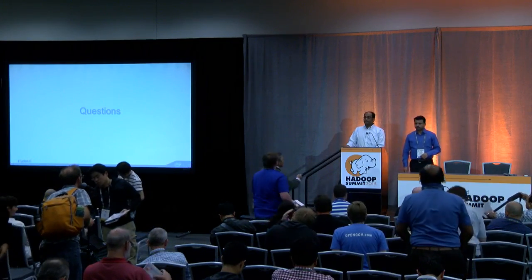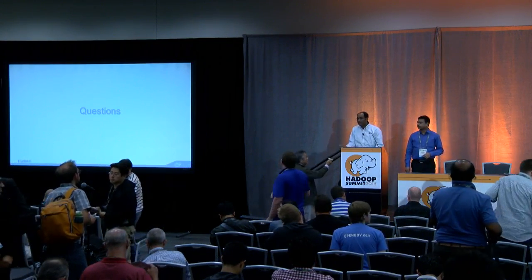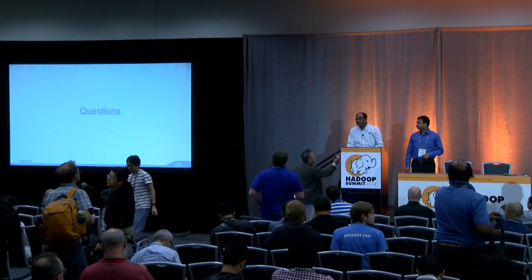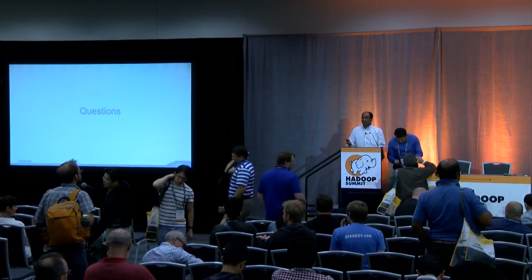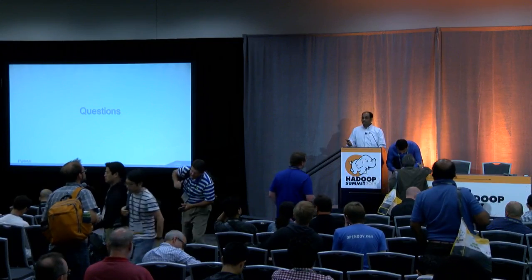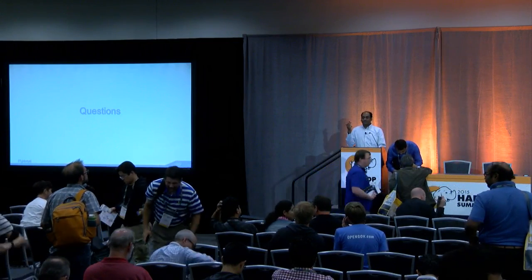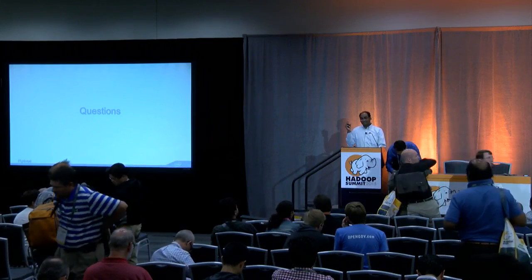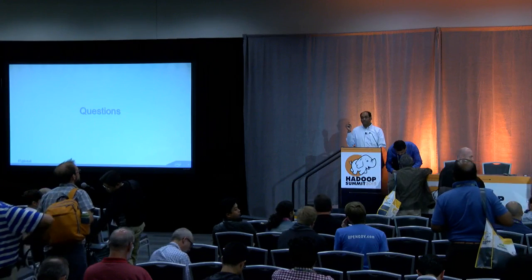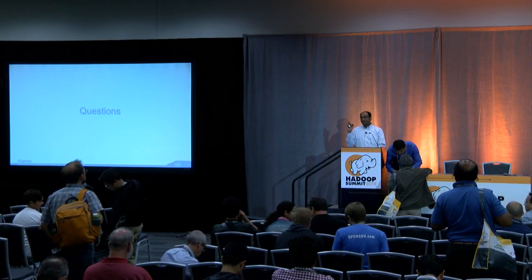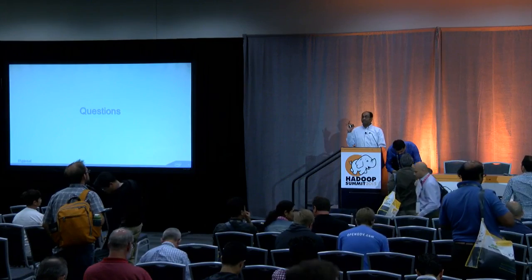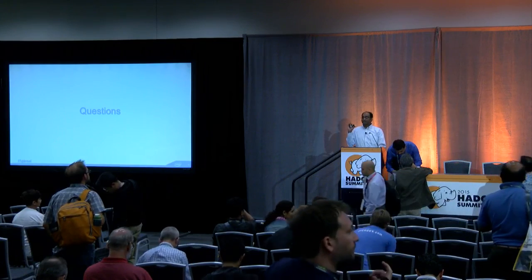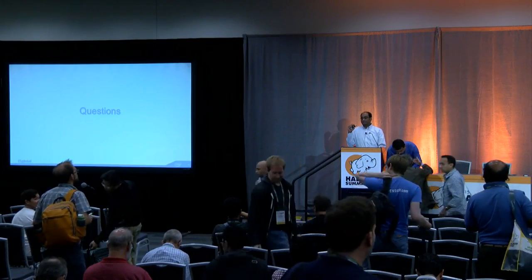Audience question: did you consider using Pig? Pig would be another MapReduce. We didn't really evaluate Pig because of the three DAG imperatives — relational primitives, in-memory processing, and continuous data flows. Pig failed on two of those aspects: continuous data flows as well as in-memory processing. So we didn't really consider it.